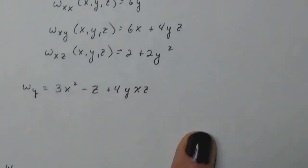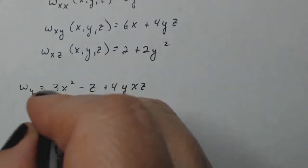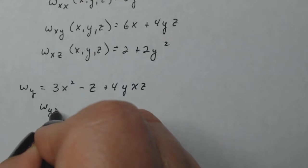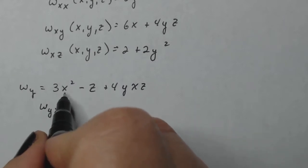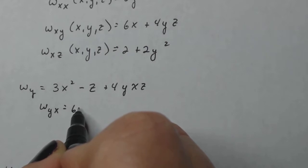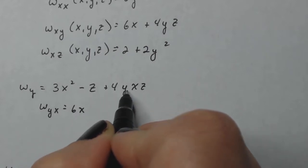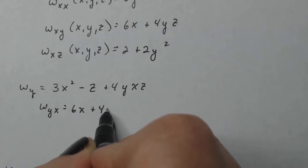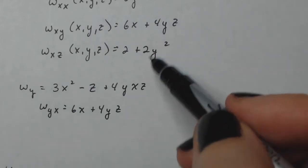Okay, so now once I have that, I'm going to come down here and do W sub Y X, which should give me, let's see six X and then plus four Y Z. Notice those are the same.